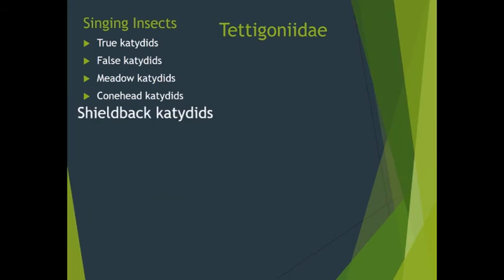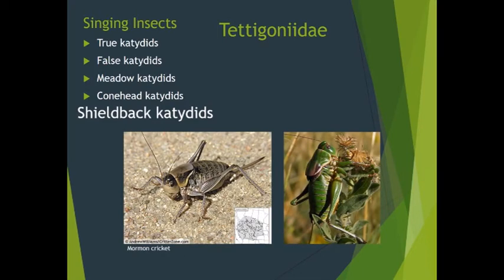Despite its name, the Nebraska conehead is an eastern species, barely making it into Nebraska. Round-tipped coneheads are the last to start singing in fall, calling from late afternoon into the night along roadsides and pastures. The robust conehead is the largest of the genus, reaching up to three inches, with a correspondingly robust call often heard along country roads at night even inside a closed vehicle. The sword-bearing conehead is named for the female's long ovipositor; their shuffling calls start at dusk and continue through the night. Shieldback katydids — named for the shield-like pronotum — have 123 species in North America; the Mormon cricket is a flightless species of sagebrush range east of the Rockies; west of the Rockies it forms huge swarming populations advancing over a mile per day.